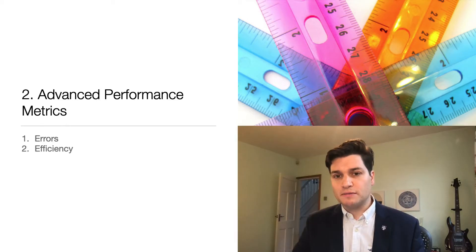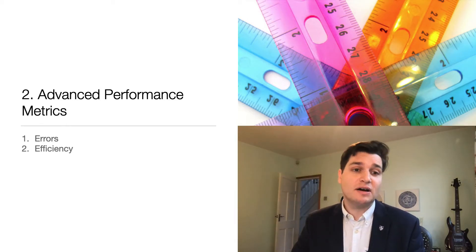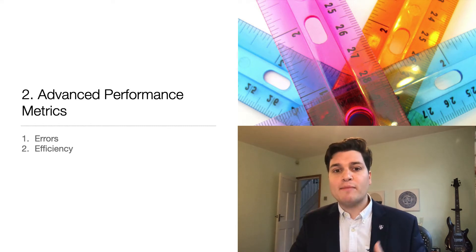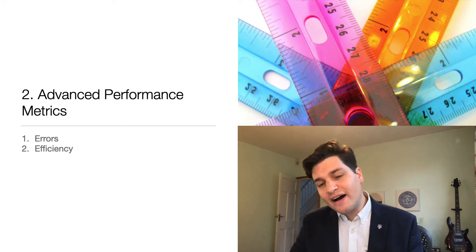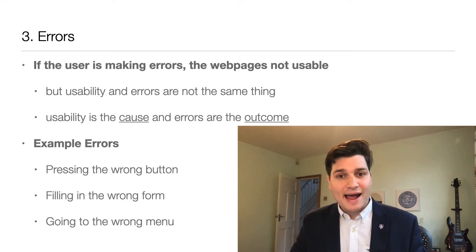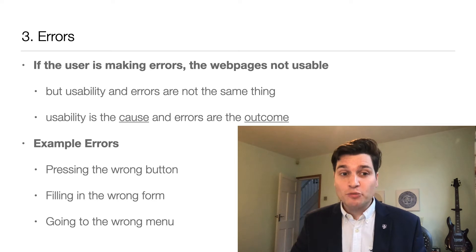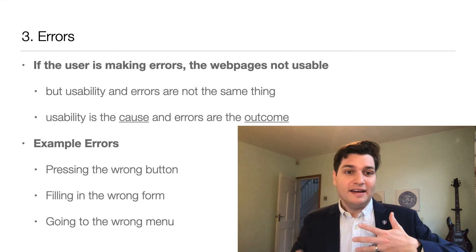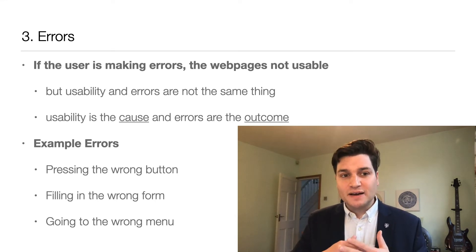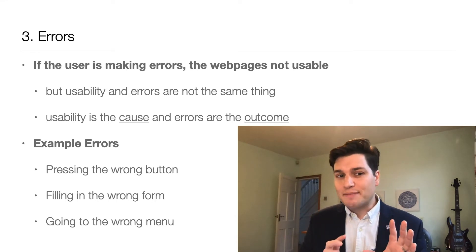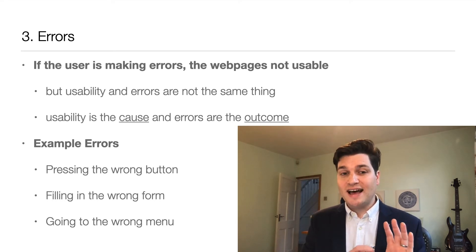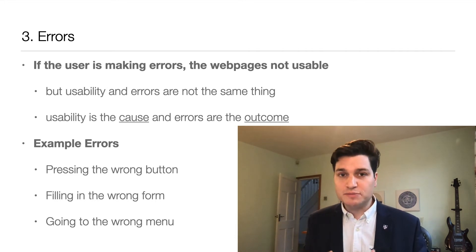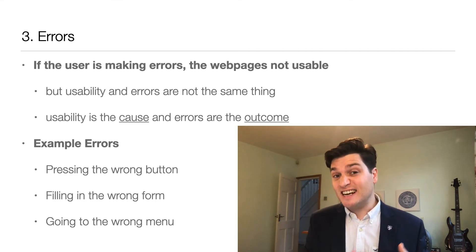Once you've thought about the simple measures of task completion and time, we can think about more advanced methods — particularly errors and quantifiable efficiency. Errors is quite similar to task completion: counting the number of times the user makes a mistake on a website or app. Bad usability is the cause and errors are the outcome, so every time a user makes an error it's because the design is not good enough.